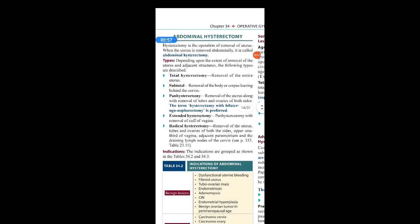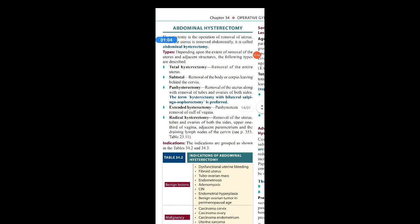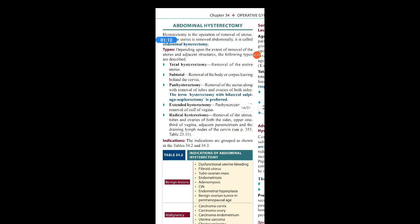Total hysterectomy is the removal of the entire uterus. When the entire uterus is removed, it is called total. Subtotal hysterectomy involves the removal of the body or corpus of the uterus, leaving behind the cervix. Only the body of the uterus is removed whereas the cervix remains as it is — this is called subtotal hysterectomy.